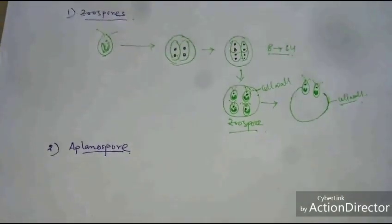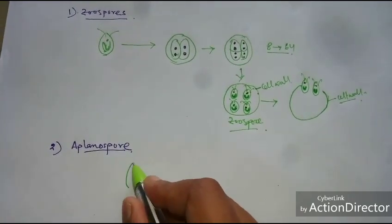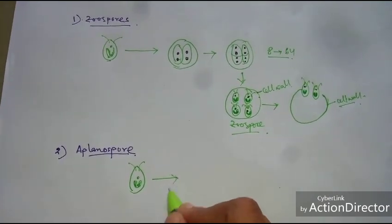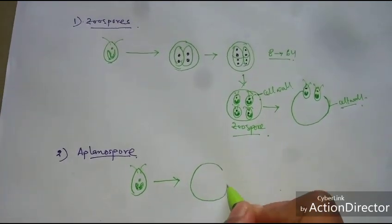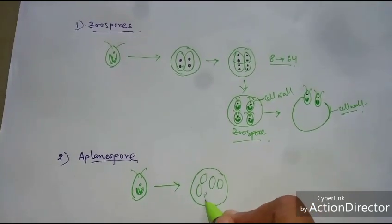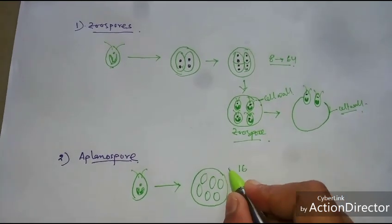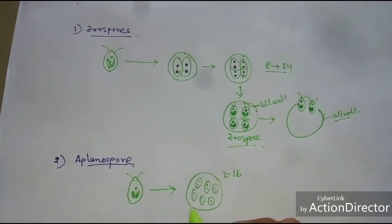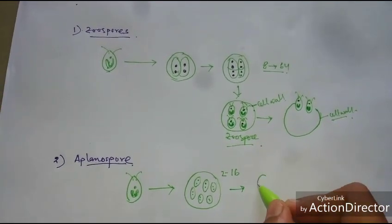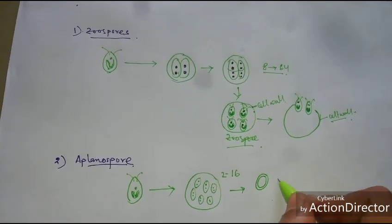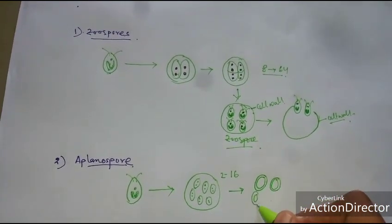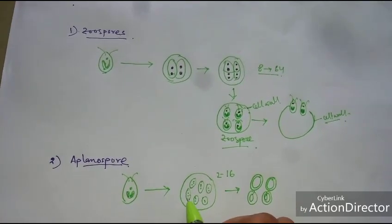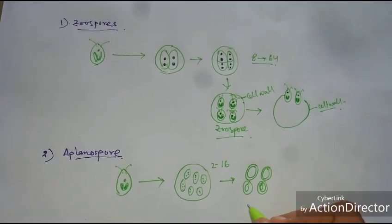The second is Aplanospore, where the main plant body first divides its protoplast into about 2 to 16 cells. The protoplast is divided and each is individually surrounded by a cell wall. This is called Aplanospore.